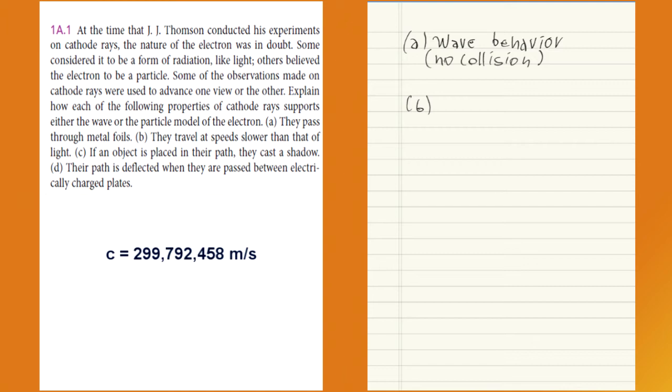So it's a particle behavior, because every electromagnetic wave travels in vacuum at a speed c equals 299 million, 792 thousand, and 458 meters per second, which decreases depending on the medium of propagation. So it is a particle behavior.